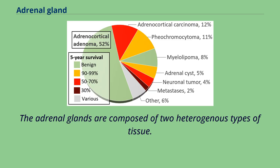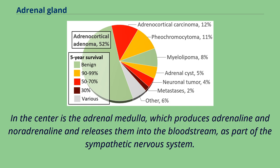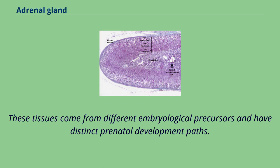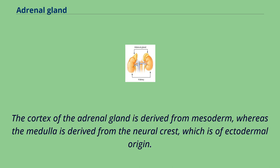The adrenal glands are composed of two heterogeneous types of tissue. In the center is the adrenal medulla, which produces adrenaline and noradrenaline and releases them into the bloodstream as part of the sympathetic nervous system. Surrounding the medulla is the cortex, which produces a variety of steroid hormones. These tissues come from different embryological precursors and have distinct prenatal development paths. The cortex of the adrenal gland is derived from mesoderm, whereas the medulla is derived from the neural crest, which is of ectodermal origin.